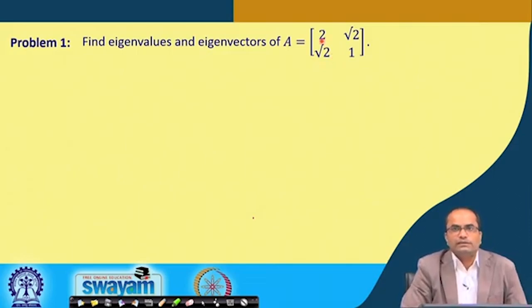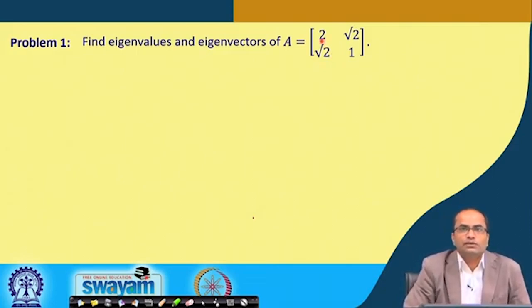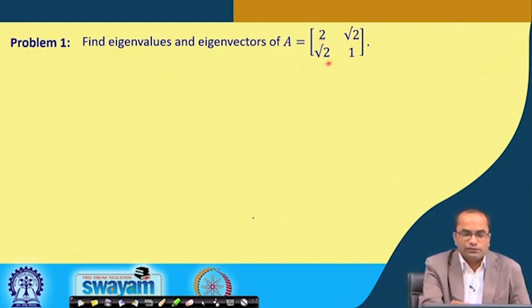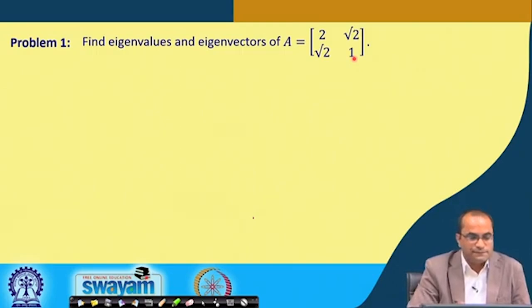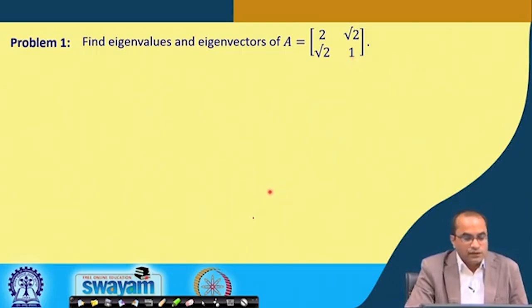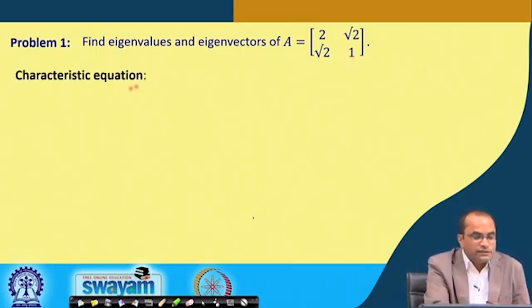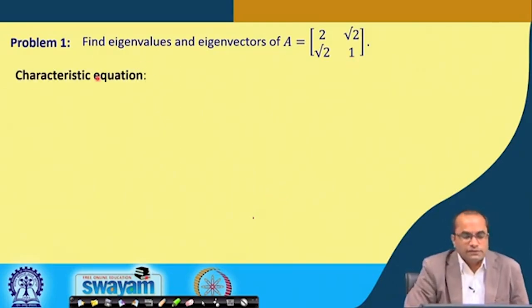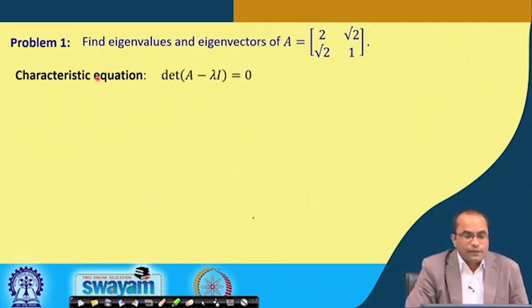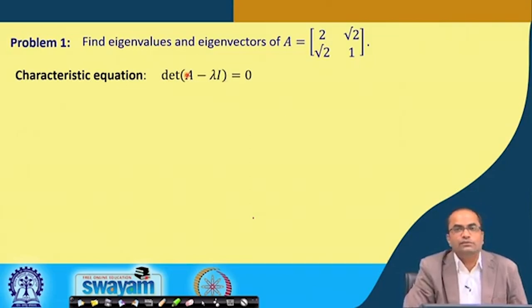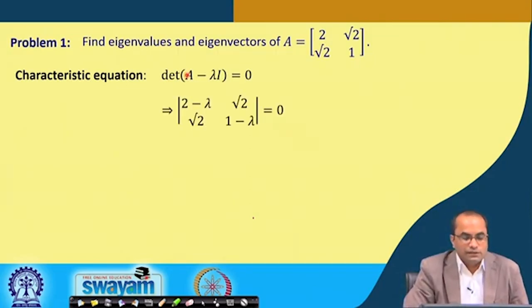A very simple matrix: we have 2, √2, √2, and 1. The characteristic equation we have to write down as a first step to find the eigenvalues — that means the determinant of A minus λI is equal to 0. That is the characteristic equation.